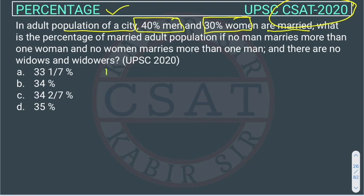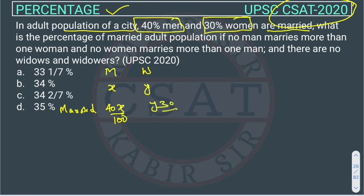Suppose there are x number of men and y number of women. Married men are 40% of x, which simplifies to 2x upon 5. Married women are 30% of y, which simplifies to 3y upon 10.